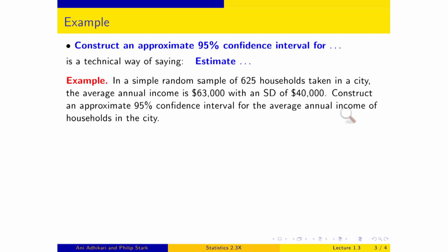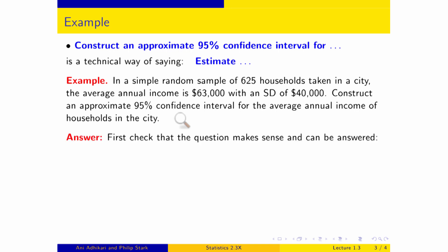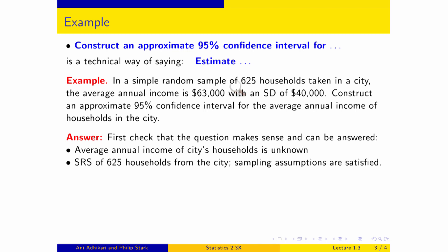Now, if somebody asked me to estimate something, the first thing I do is check: do I know it already? Do I know it already? I do not. There is a $63,000, which is an average, but it's an average of just these 625 households, not all of the households in the city. So I don't know that number. Checking assumptions: first, I actually don't know the number, so it makes sense to estimate it. Can I estimate it? That depends on the kind of sample I have — yes, I have a simple random sample. 625 is nice and big, the central limit theorem is going to apply, and a city is going to have considerably more than 625 households. If I don't give you a population size, you can assume it's large enough. Sampling assumptions are justified.